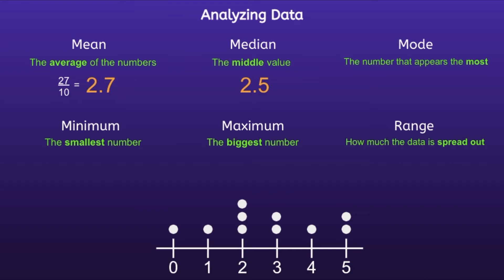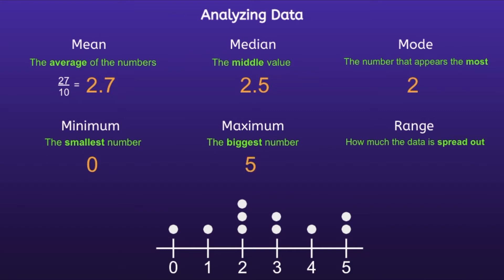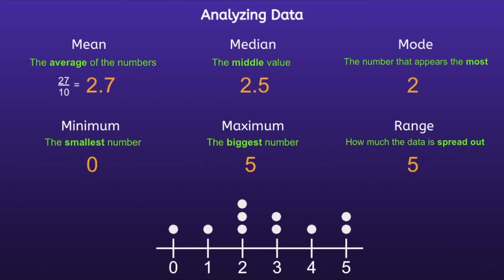Mode — the number that appears the most. If we look in the line plot, we can see that the number 2 appears the most. So the mode will be 2. Minimum, the smallest number — the smallest number in the line plot is zero. Maximum, the biggest number — the biggest number in the line plot is 5. And finally, range — how much the data is spread out. In order to find the range, you subtract the smallest number from the largest number, or you subtract the minimum from the maximum. 5 minus zero is equal to 5. So the range will be 5.